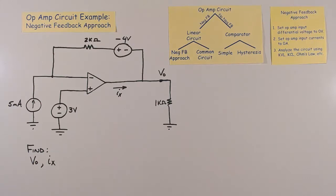For the negative feedback approach, we set the input differential voltage to 0 volts due to the effect of negative feedback. We set the op-amp input currents to 0 amps, since op-amps have high impedance inputs.